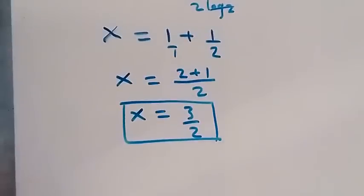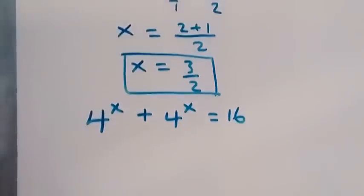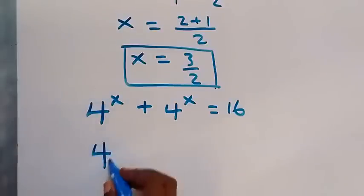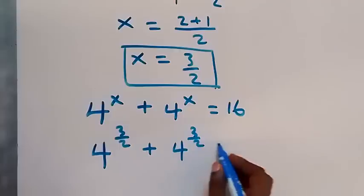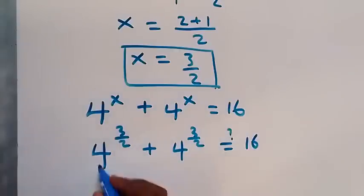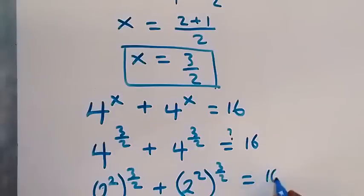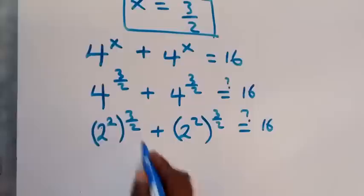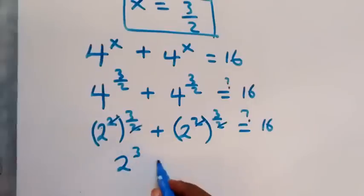Let's check to confirm this satisfies the problem. We have 4 raised to the power x plus 4 raised to the power x equals 16. When x equals 3 over 2, we get 4 raised to power 3 over 2 plus 4 raised to power 3 over 2. We write 4 as 2 squared, so we have (2 squared) raised to power 3 over 2 plus (2 squared) raised to power 3 over 2 equals 16. Multiplying the powers, the 2s cancel and we are left with 2 raised to power 3 plus 2 raised to power 3.